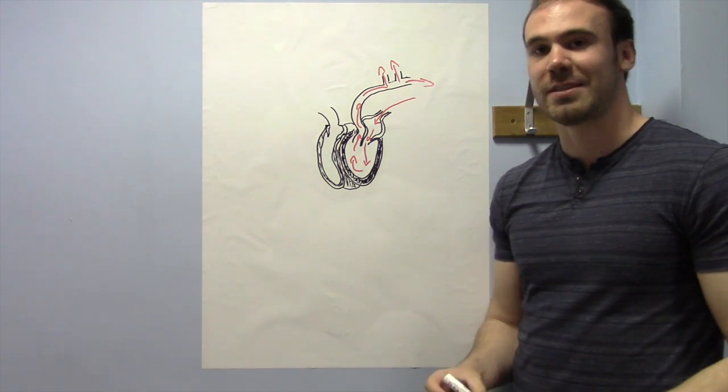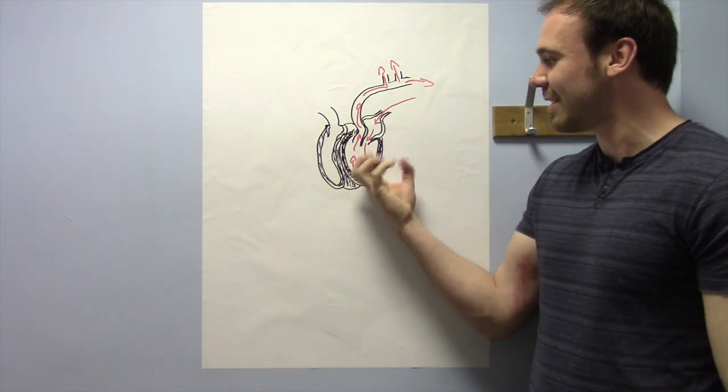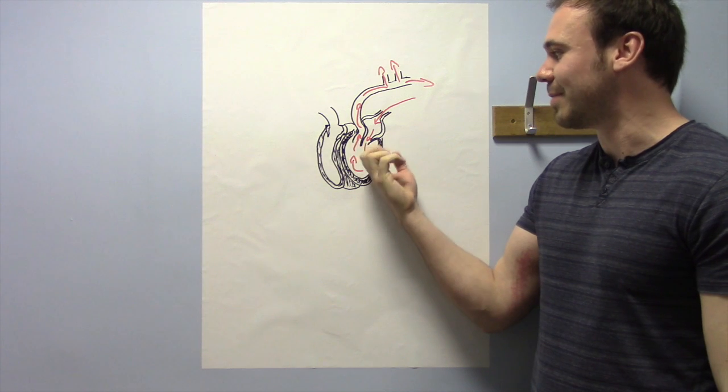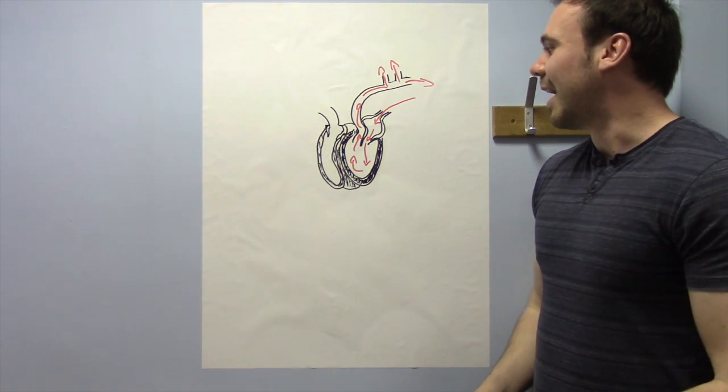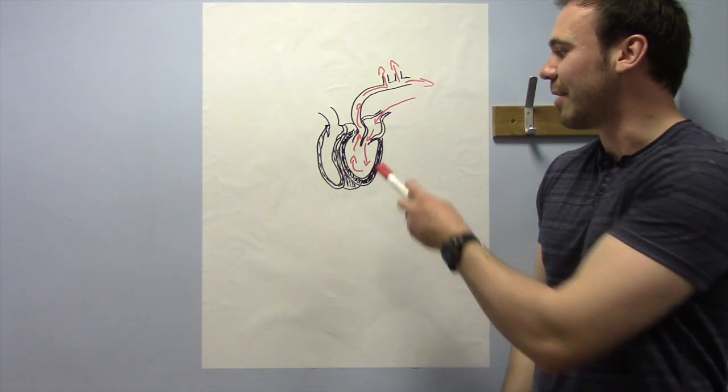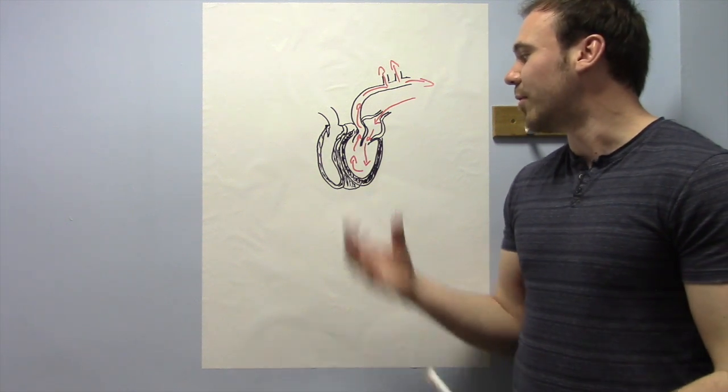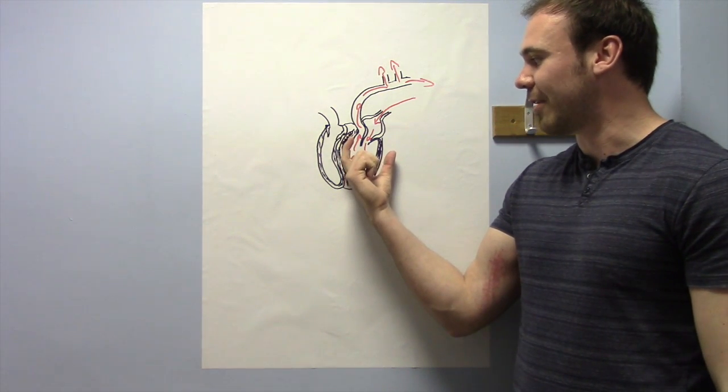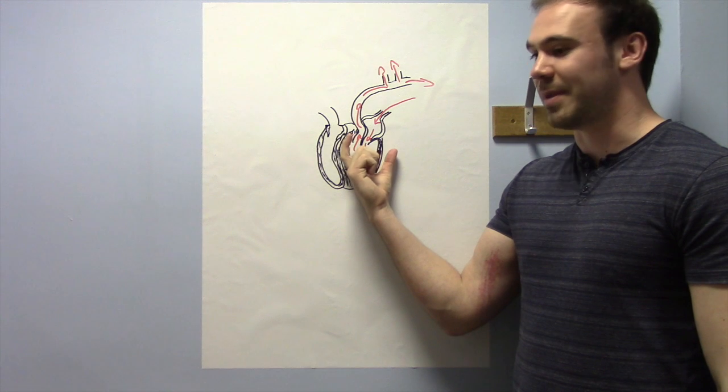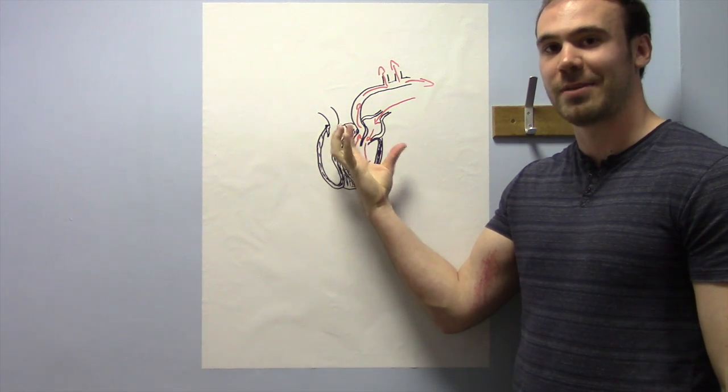As you exercise, your heart rate increases, so the left ventricle is going to be working harder to pump this blood around the body. And what this means is that when you're resting, your heart will adapt to be able to hold more blood inside the left ventricle.